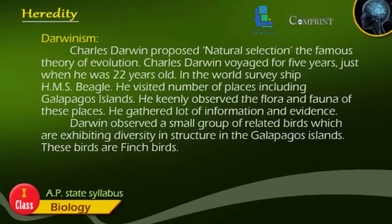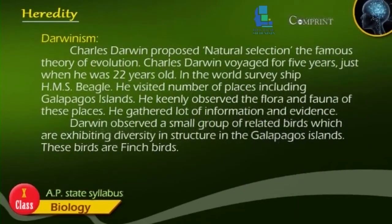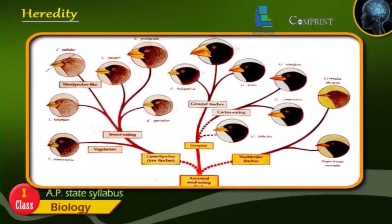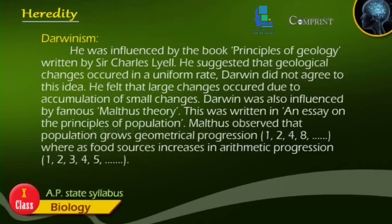Darwinism. Charles Darwin proposed natural selection — the famous theory of evolution. Charles Darwin worked for five years starting when he was 22 years old, on the world survey ship HMS Beagle. He visited a number of places including the Galapagos Islands, where he keenly observed the flora and fauna, gathering a lot of information and evidence. Darwin observed a small group of related birds exhibiting diversity in structure — the finch birds. He was influenced by the book Principles of Geology, which suggested geological changes occurred at a uniform rate, though Darwin felt that large changes occur due to accumulation of small changes.